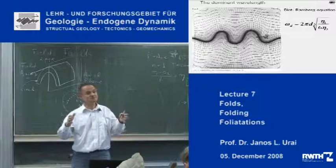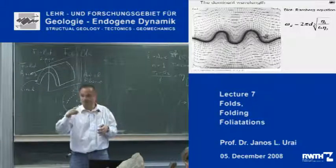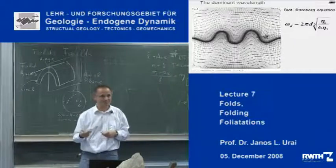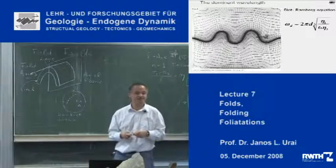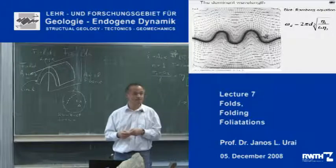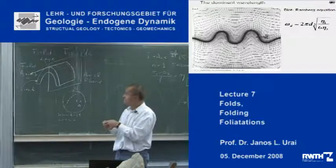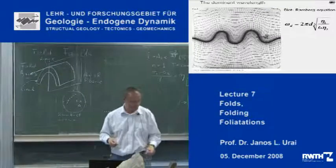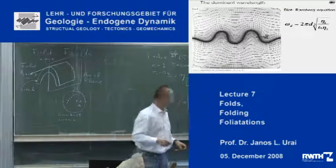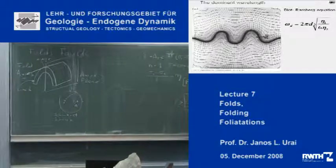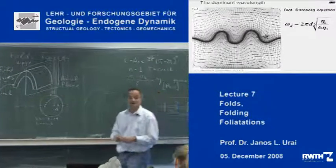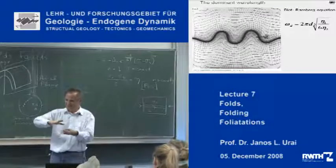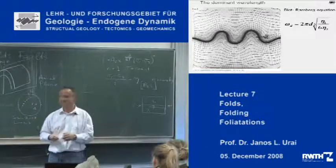The system chooses the wavelength of the fold basically spontaneously. And there is a very famous equation that allows you to calculate this wavelength — it is the Biot-Ramberg equation. It has been derived many years ago using the theory to minimize the energy during the shortening of this layer.